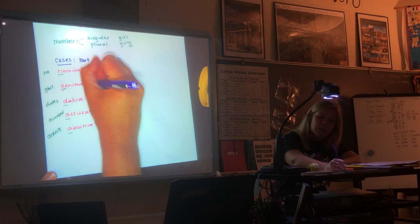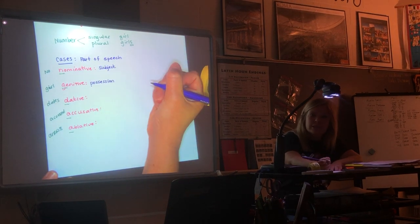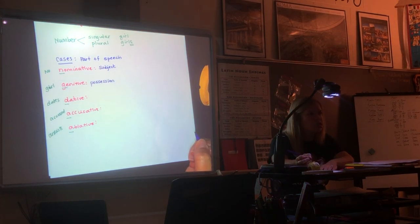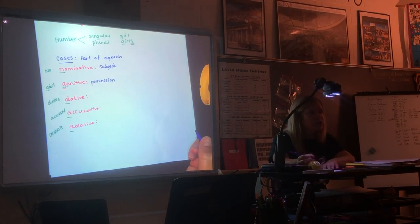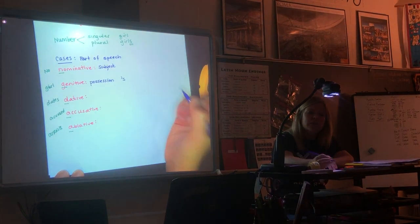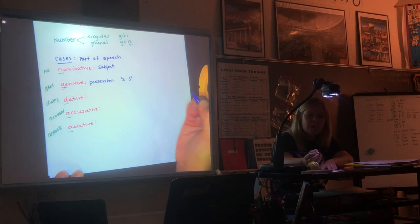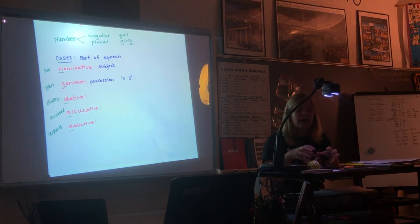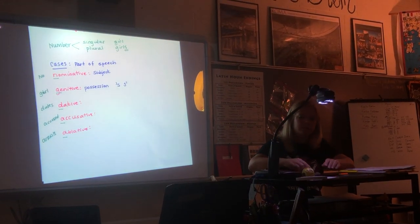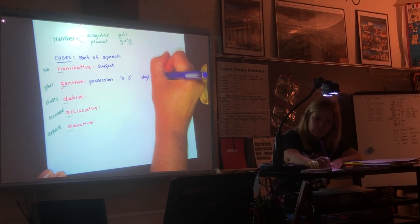Genitive case is if you want to show possession. Somebody owning something. How do you show possession in English? Apostrophe S. Yeah, with an apostrophe S. What if it's plural? S apostrophe. For example, if you have dogs, it's the dog's bowl. Dog's bowl. Here is one dog. That looks like a pig. That's one dog with its bowl.